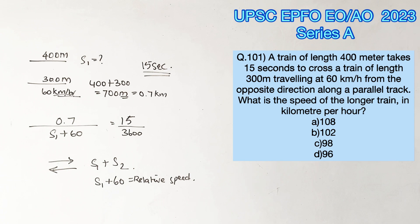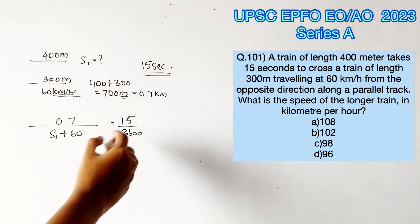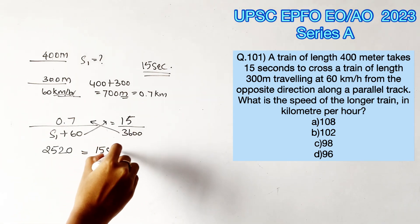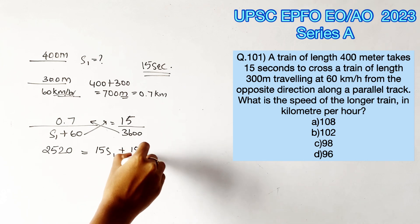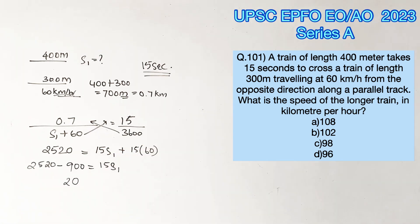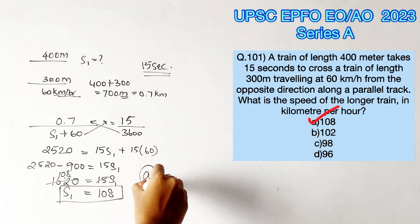Cross multiplying, we get 2520 equals 15 S1 plus 15 into 60. Solving for S1, we get S1 equals 108. Therefore, option A is the right answer.